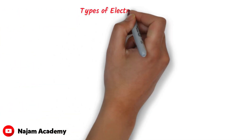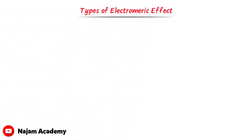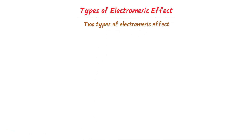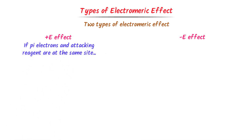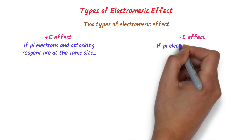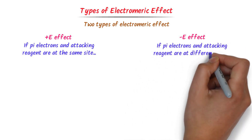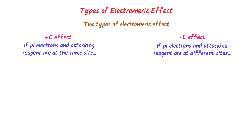Now let me teach you the types of electromeric effect. There are two types: positive electromeric effect and negative electromeric effect. Here is my personal trick to remember them: if the pi electrons and the attacking reagent are at the same site, it is called positive electromeric effect. If the pi electrons and the attacking reagent are at different sites, it is known as negative electromeric effect.